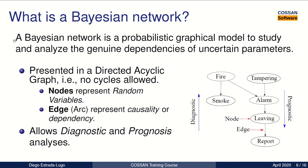So what is a Bayesian network? It is a probabilistic graphical model to study the joint dependencies of uncertain parameters. It is presented in a directed acyclic graph.